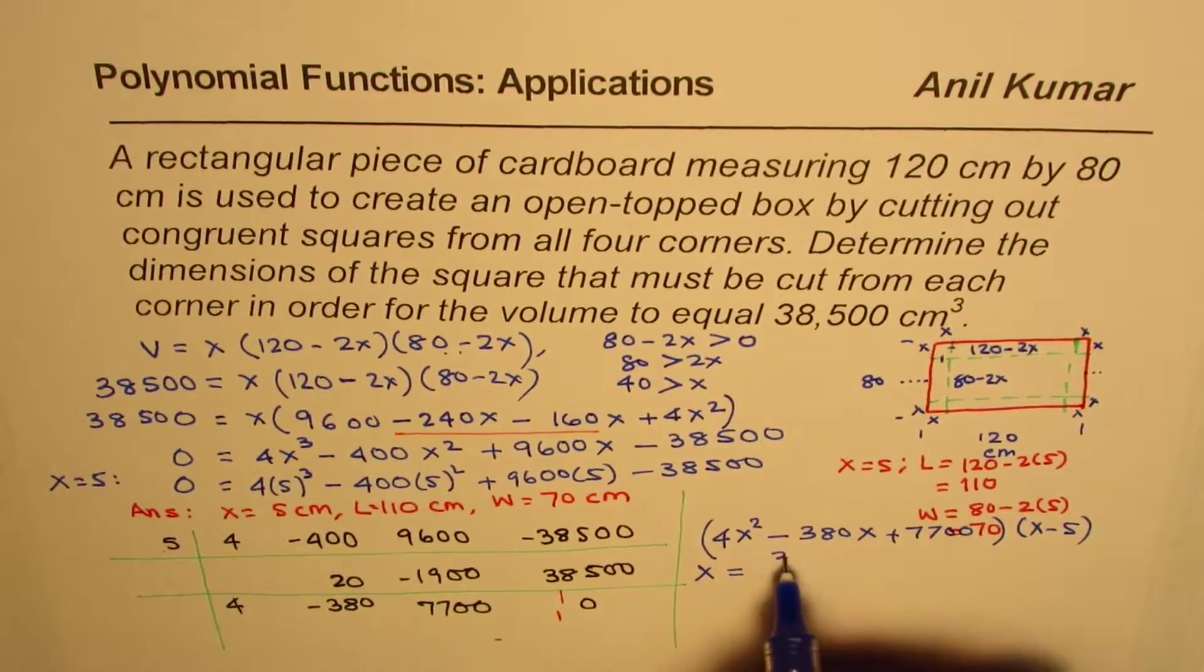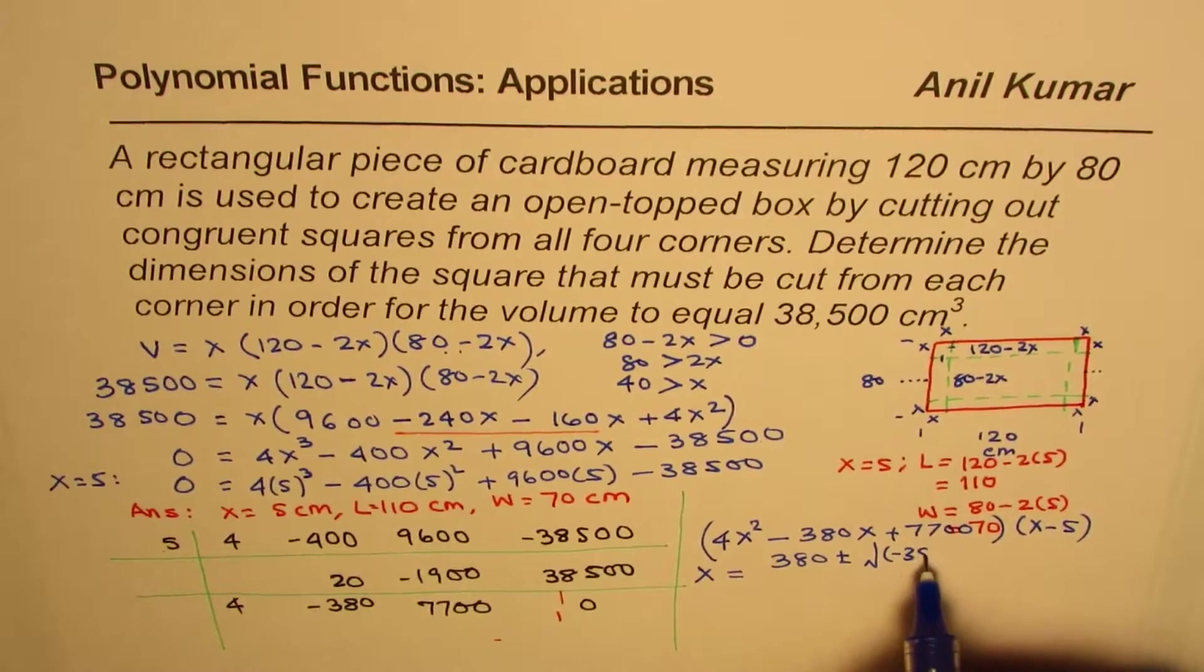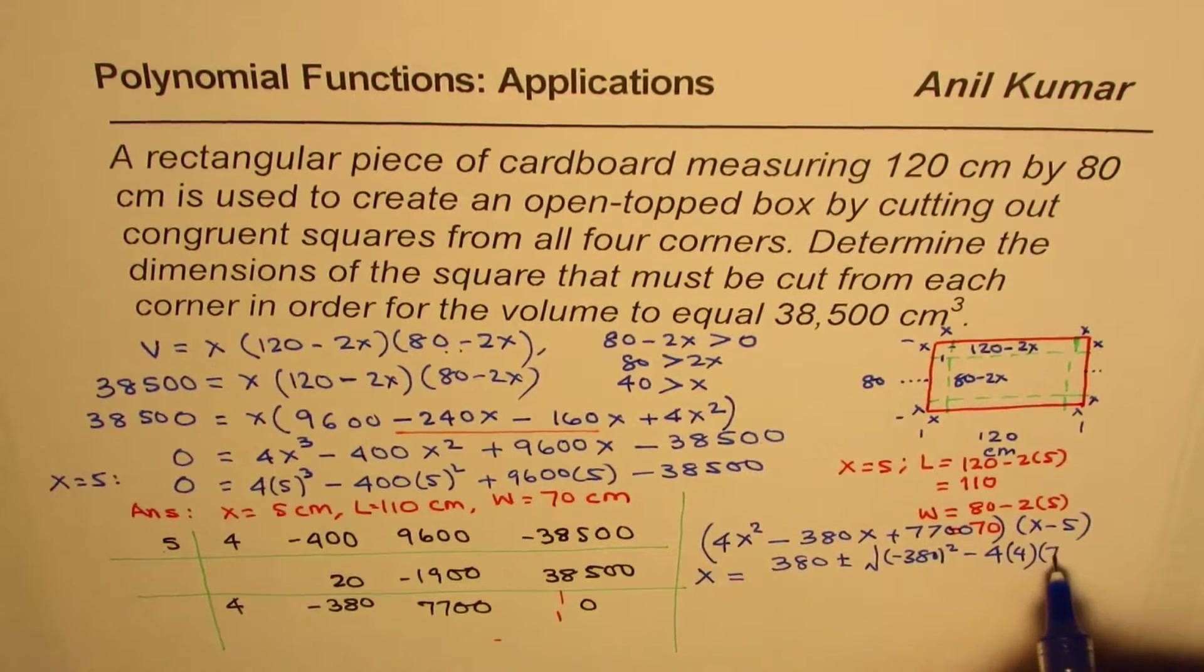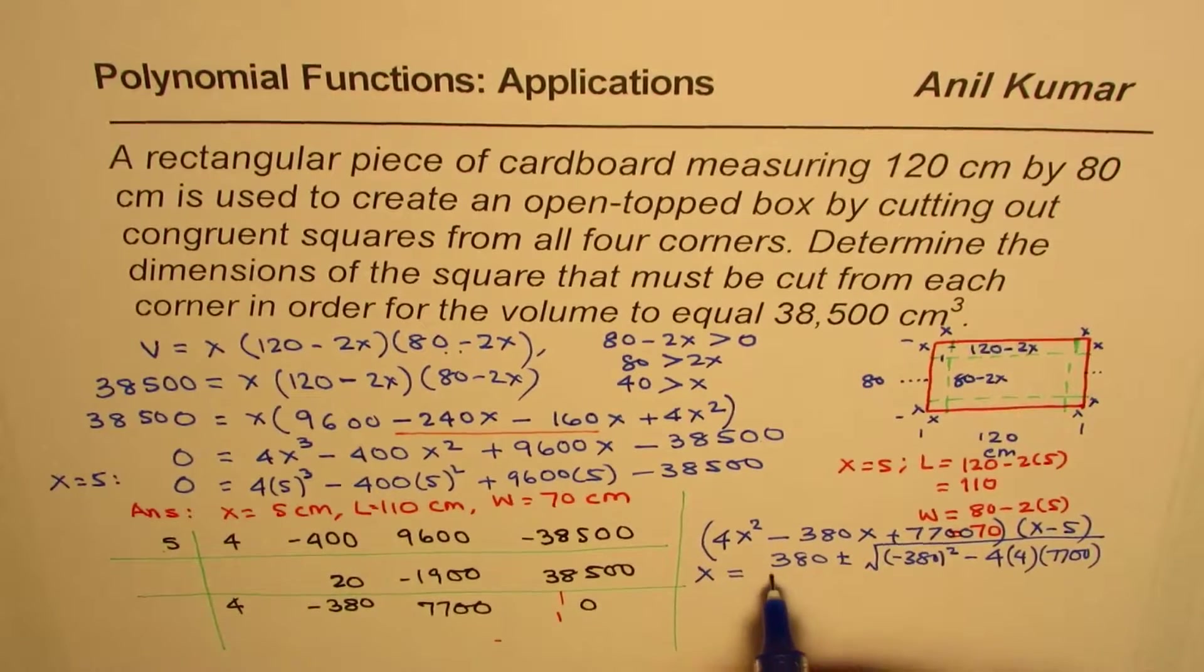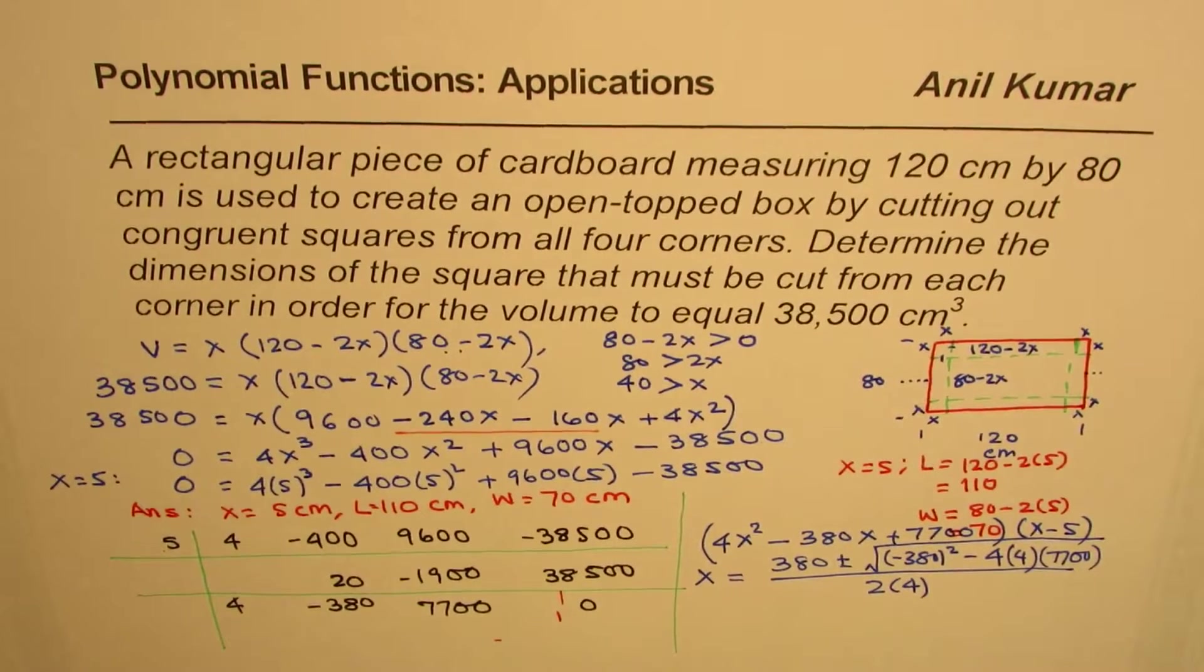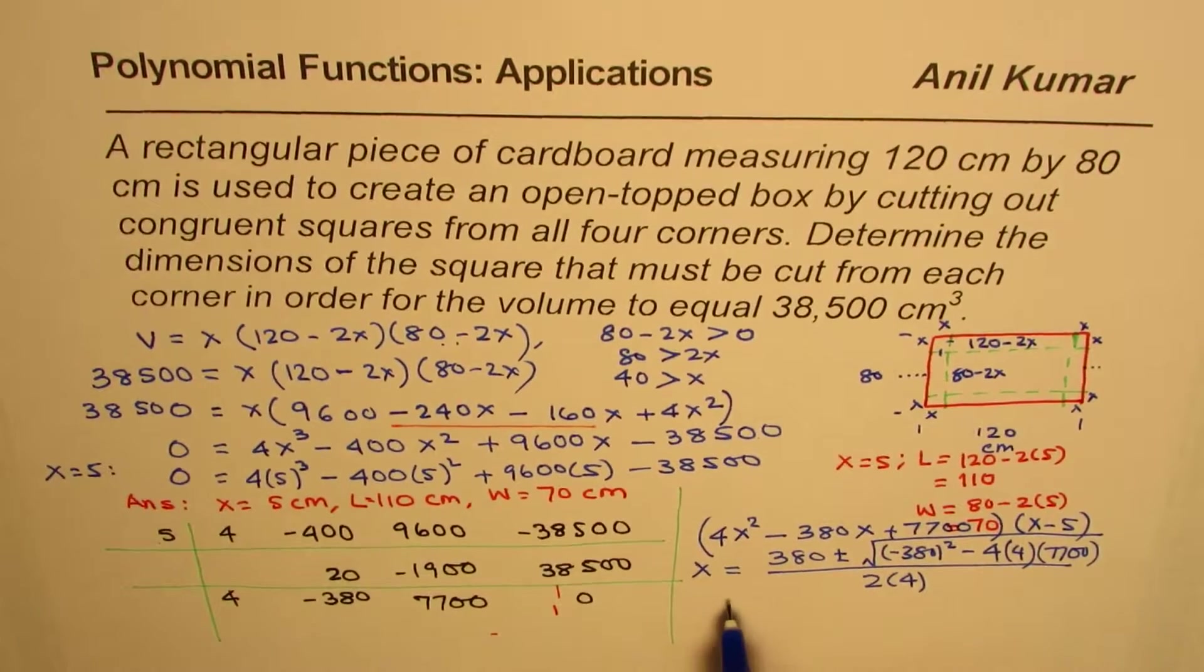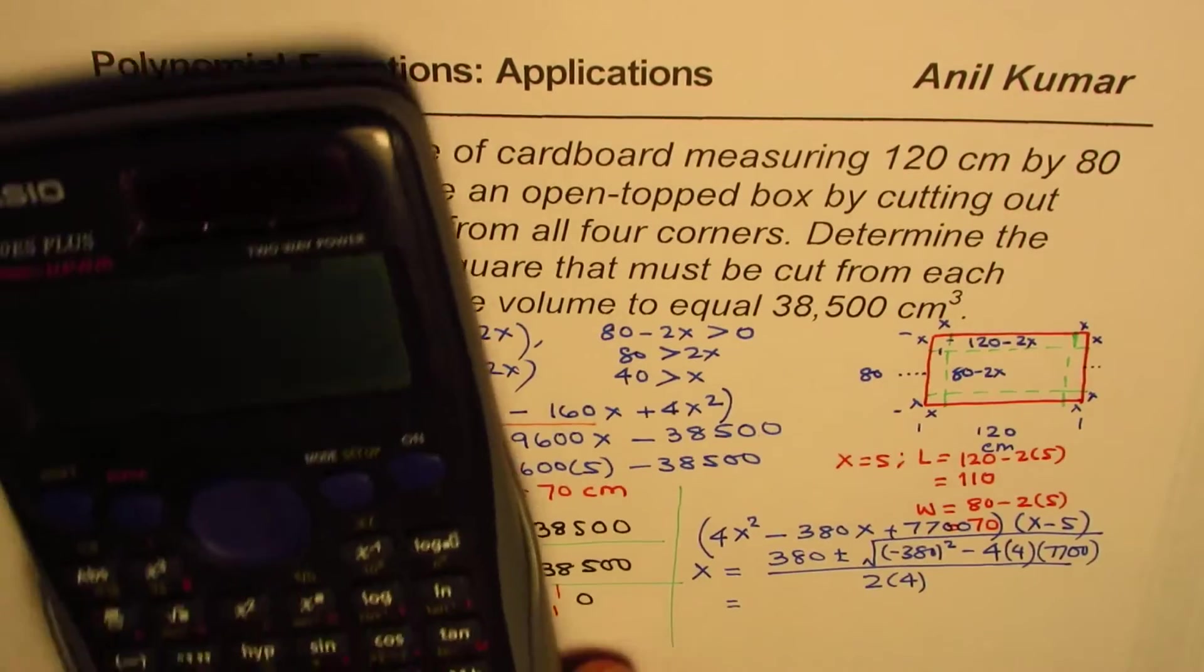X equals to minus of minus 380 plus minus square root of minus 380 whole square minus 4 times A times C is 4, and C is 7,700, square root divided by 2 times 4. We could have divided by 4, simplified, and then found the answer also. That could have been a better approach, actually. Let's use the calculator and find the term within the square root, which is, this becomes positive.